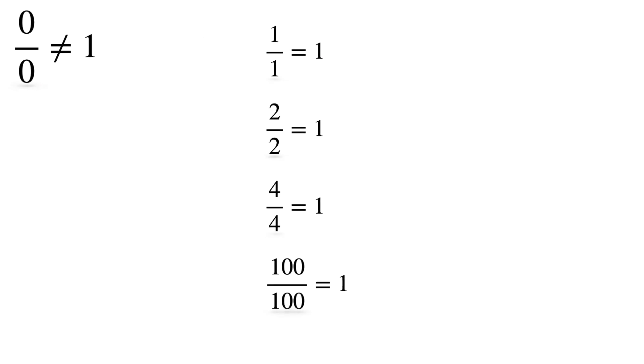We know that 1 by 1 equals 1, 2 by 2 equals 1, 4 by 4 equals 1, 100 by 100 equals 1. But why is 0 by 0 not equal to 1?